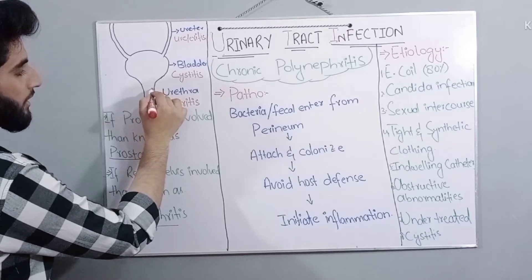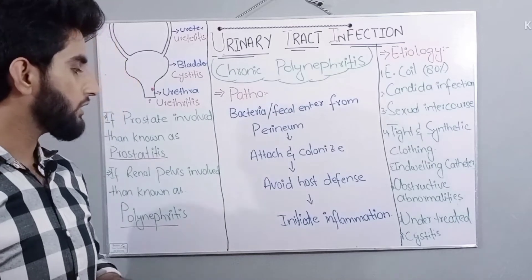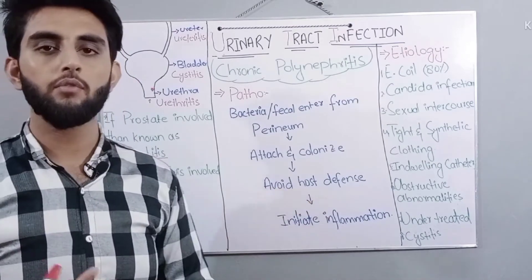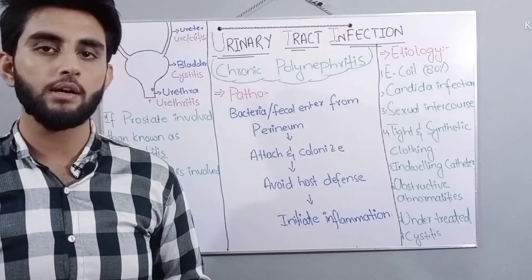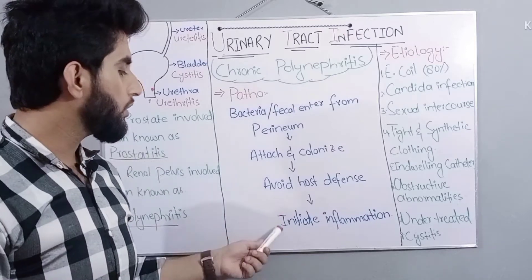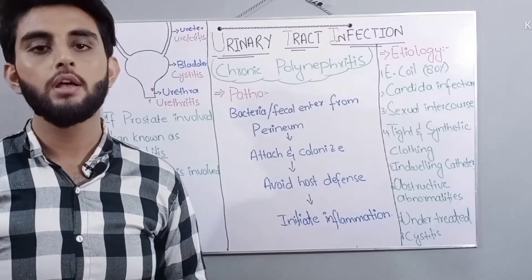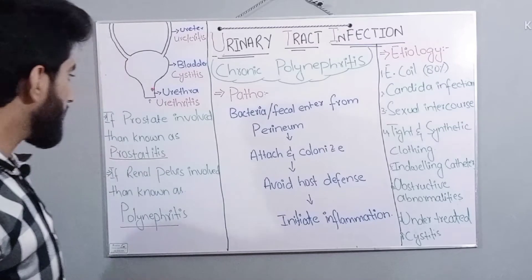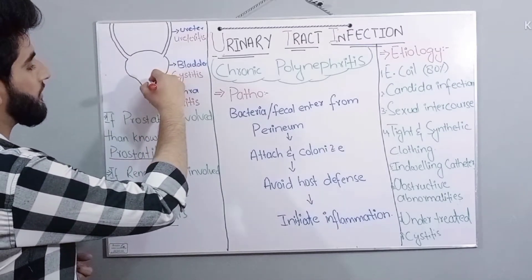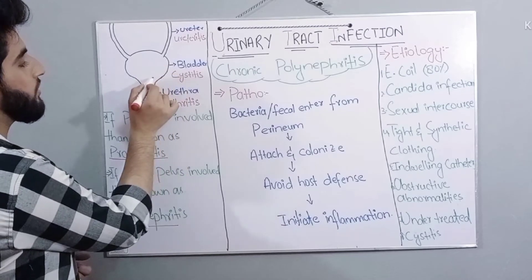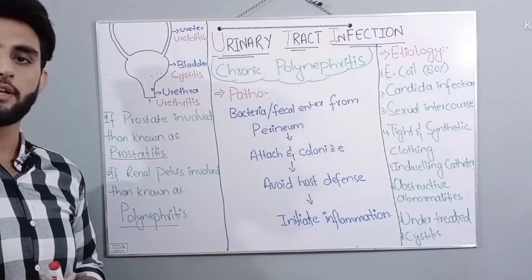The bacteria connect to the endothelium membrane. The endothelium membrane responds as part of the host defense, causing inflammation. After that, the bacteria will be colonized, and once colonized, they can move towards the ureter and then up to the kidneys.